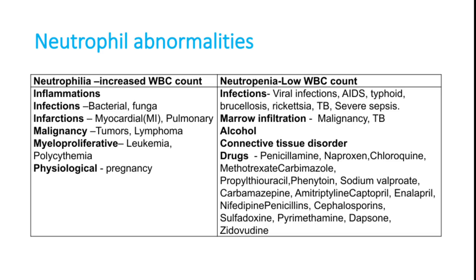Important drugs causing neutropenia: methotrexate (especially without folic acid supplementation), carbimazole, propylthiouracil, phenytoin, sodium valproate, carbamazepine, amitriptyline, captopril, enalapril, nifedipine, penicillin, cephalosporins, sulfadoxine-pyrimethamine, dapsone, and zidovudine. The most important to remember are methotrexate, carbimazole, propylthiouracil, and phenytoin. Always check WBC count when treating patients with these drugs.